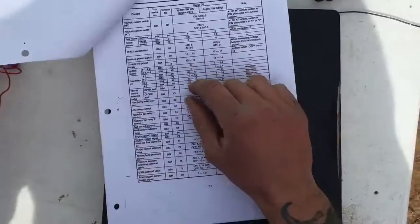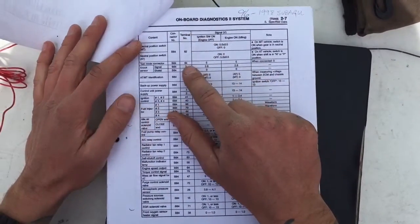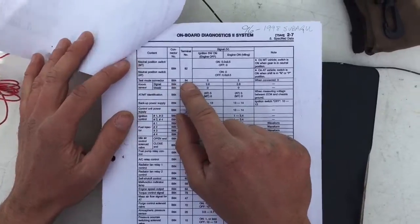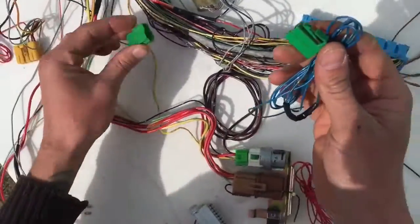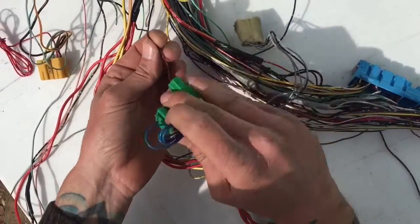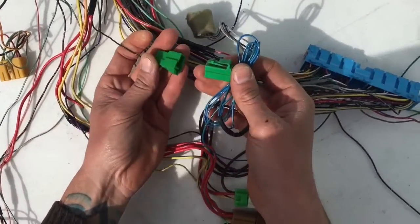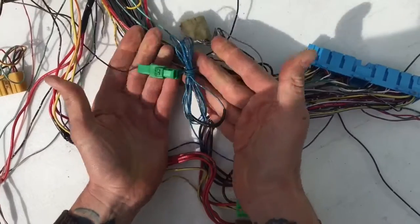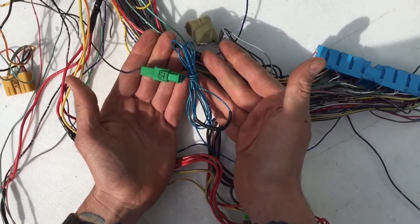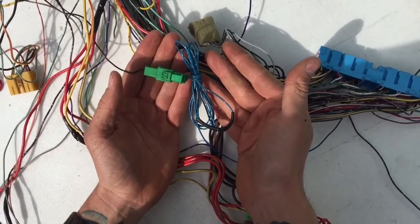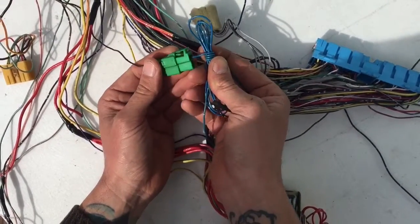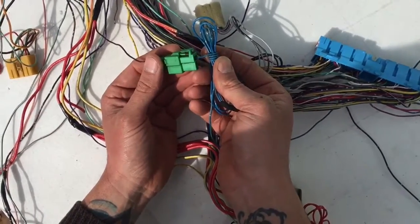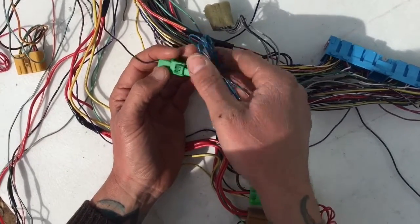That should be on this page. Pin 84, test mode connector. When you ground this connector to the other green side, it's a black red that's a ground. When you ground this, it puts the computer into test mode.